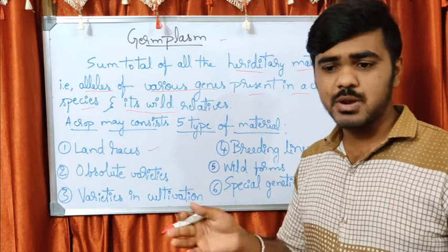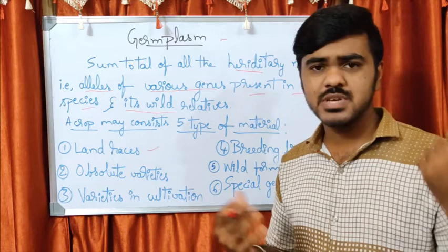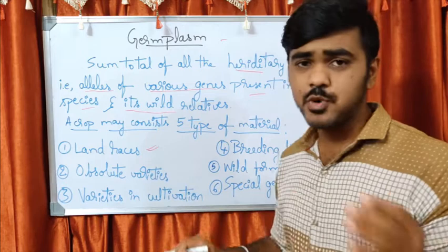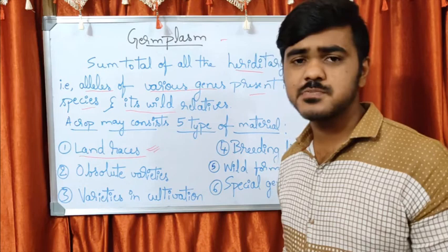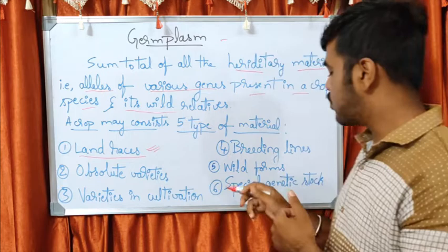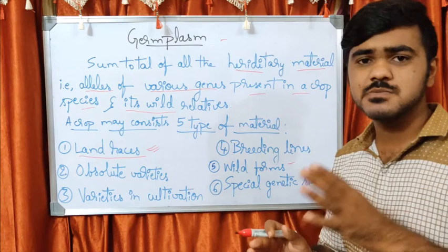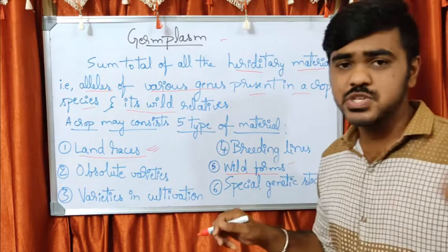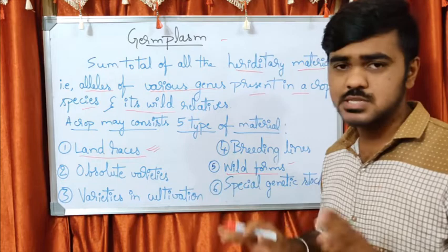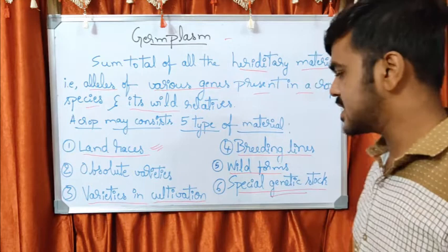Germplasm may consist of five important types of material. The first is land races — these are developed or evolved either through natural selection or artificial selection, and have very potential value as sources of variability. There is a slight difference between wild relatives and land races: land races are closely related to the crop species, while wild forms are the species from which the crop was originally derived.